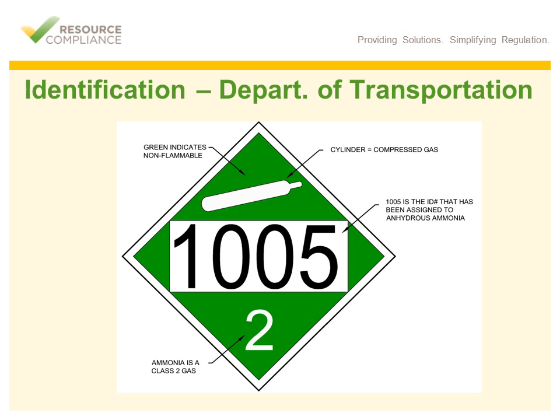There are several labels and placards used to identify containers and pipes that contain ammonia. The first system we will discuss is the DOT placard system. Whenever a trailer or rail car is carrying ammonia, it should be placarded on all four sides with the label on this slide. Each DOT placard has four required components: an ID number, class number, background color, and a symbol. For ammonia, the ID number is 1005, the class number is 2 indicating a compressed gas, the background color is green indicating that ammonia is generally considered non-flammable, and the symbol is a compressed gas cylinder, which provides a warning of high pressure within the container.